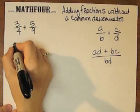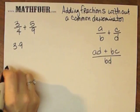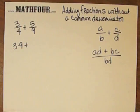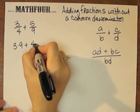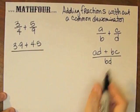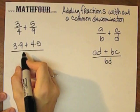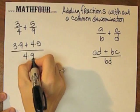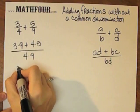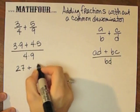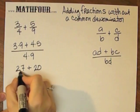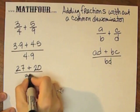So I have 3 times 9, that's A times D, plus 4 times 5 over, and then I multiply the denominators, 4 times 9. So 3 times 9 is 27, 4 times 5 is 20, and 4 times 9 is 36.